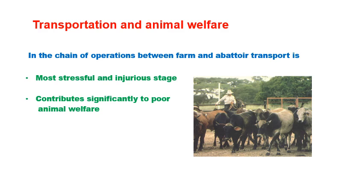Transportation and animal welfare are closely linked. In the process of bringing the animal to the slaughterhouse, transportation is the most crucial step, having the major impact on animals by creating the most stressful and injurious activities. Therefore, proper animal welfare largely depends on how transportation of the animal is handled.